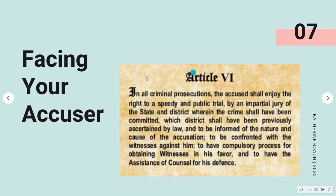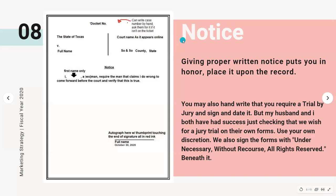I'm going to show you an example I've been using successfully to stop traffic tickets. This is really how you want to settle most of your court cases — by giving notice to the court. Here's a template: put your docket or case number, sometimes they're not on the tickets so you can handwrite it when you get there. Put the court name as it appears online — 'such-and-such county and state, the State of Texas versus your full name.' Then give notice saying: 'I, first name only, a woman or a man, require the man or woman that claims I do wrong to come forward before the court and verify that this is true.' Autograph it with a thumbprint touching the end of your signature in all red ink, full name printed underneath, and the date.